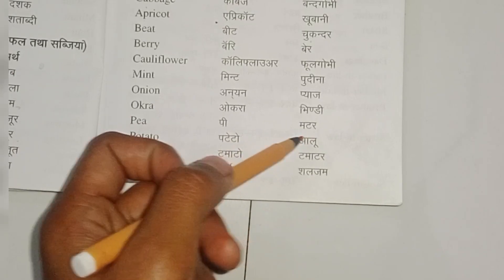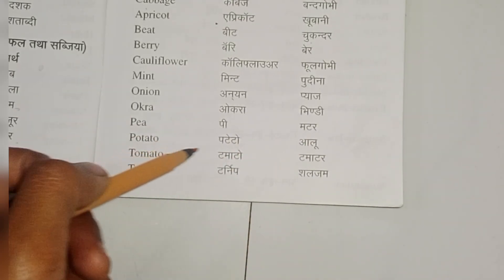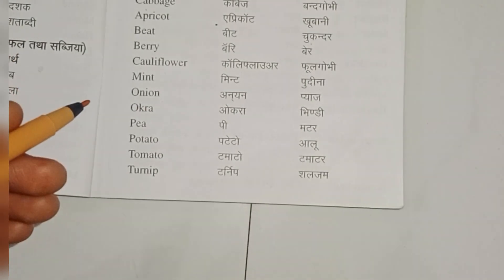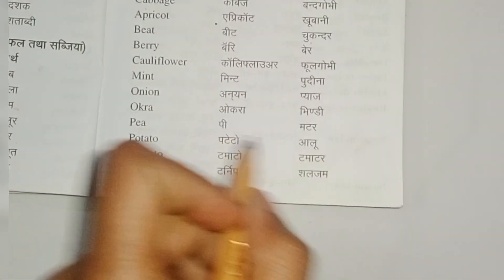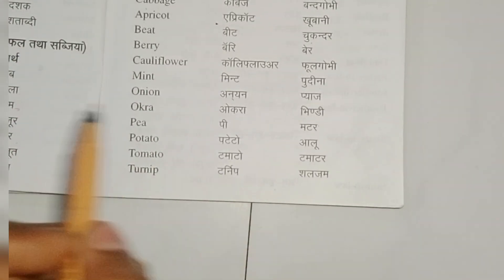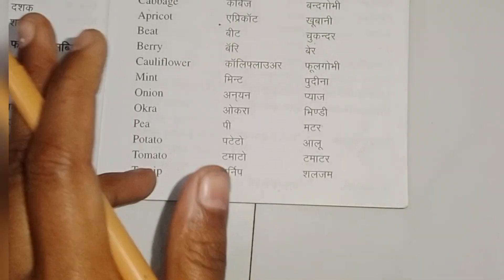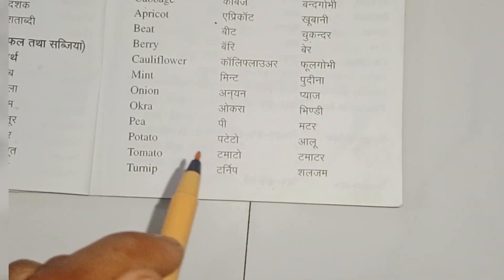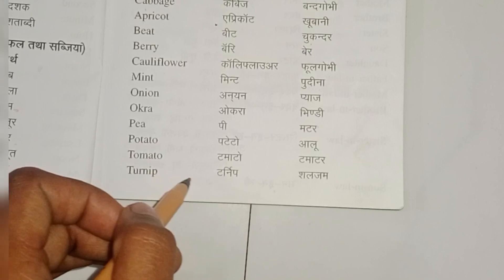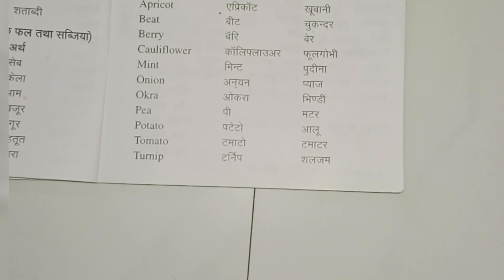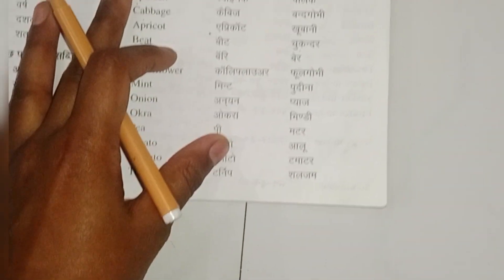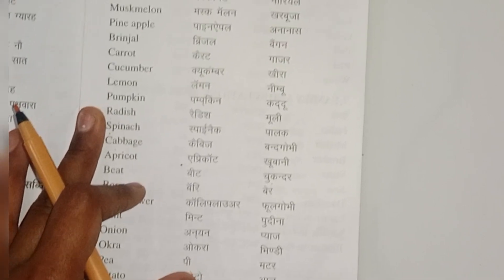Peas — Matar. Potato — not Potato, it's Potato — Aloo. Tomato — Tamatar. Turnip — Shalgam. And this is all about the food's name. If you want to take a screenshot of it, you can.